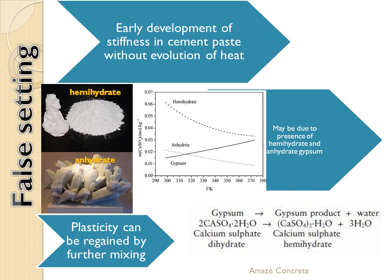False set is not desirable, but it is not cause for rejection, because after mixing properly, that plasticity can be regained. It develops as early stiffness in cement paste without evolution of heat. The presence of hemi-hydrate and anhydrate gypsum can cause false set.